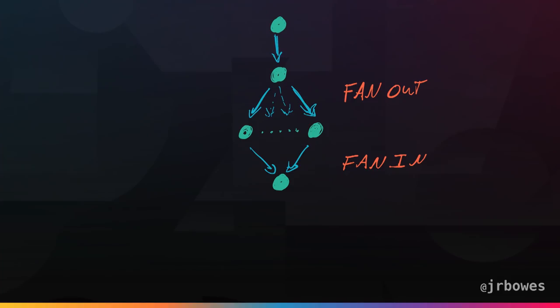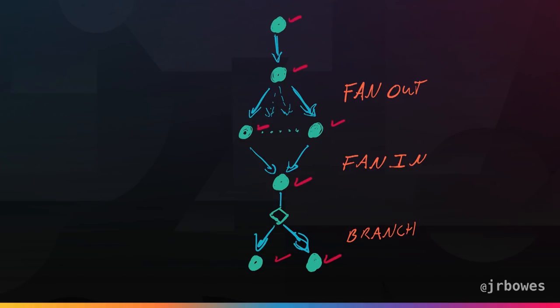A couple years ago we were building out a system where we needed to run a state machine, and rather than just building this as code we had a few constraints. We needed to do parallelism where we could look at a team, extract all the users from the team, and do operations on them. We needed to add some branching logic, and we needed at-least-once semantics on the workflow. Because we were calling external partner systems, we wanted to be as close to once as possible, so we had to checkpoint after each state.